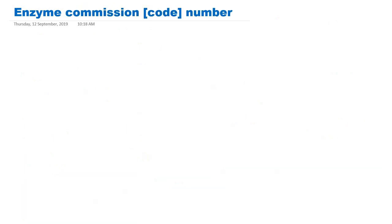Now we will look at the enzyme commission number or enzyme code number given by the International Union of Biochemistry and Molecular Biology. Each enzyme has a unique number that begins with EC — which stands for enzyme code, enzyme class, or enzyme commission number — followed by four digits, for example 1.1.1.1. There are different numbers for different classes of enzymes.